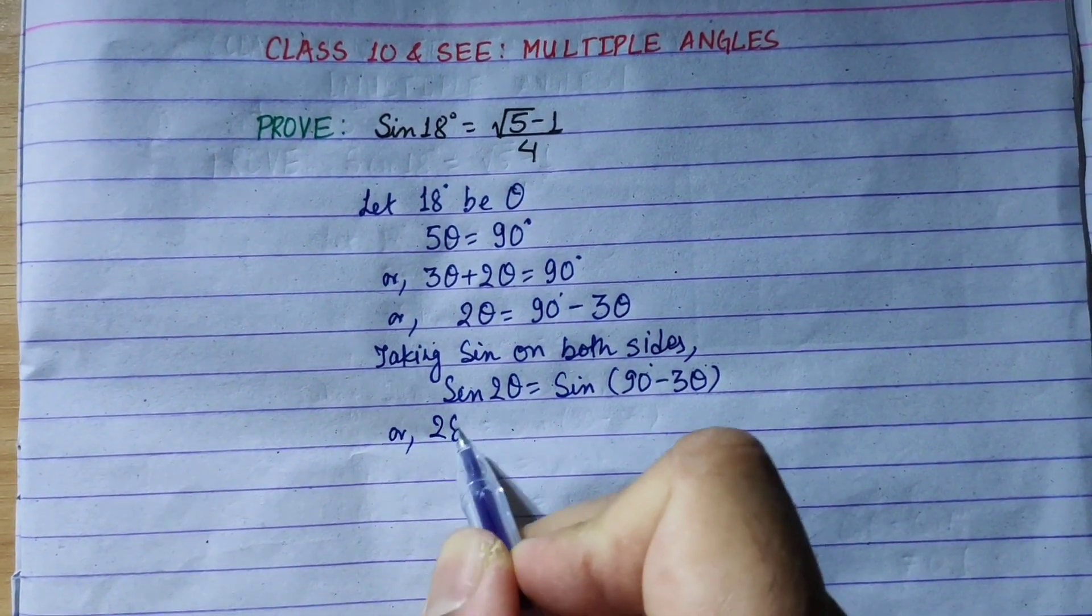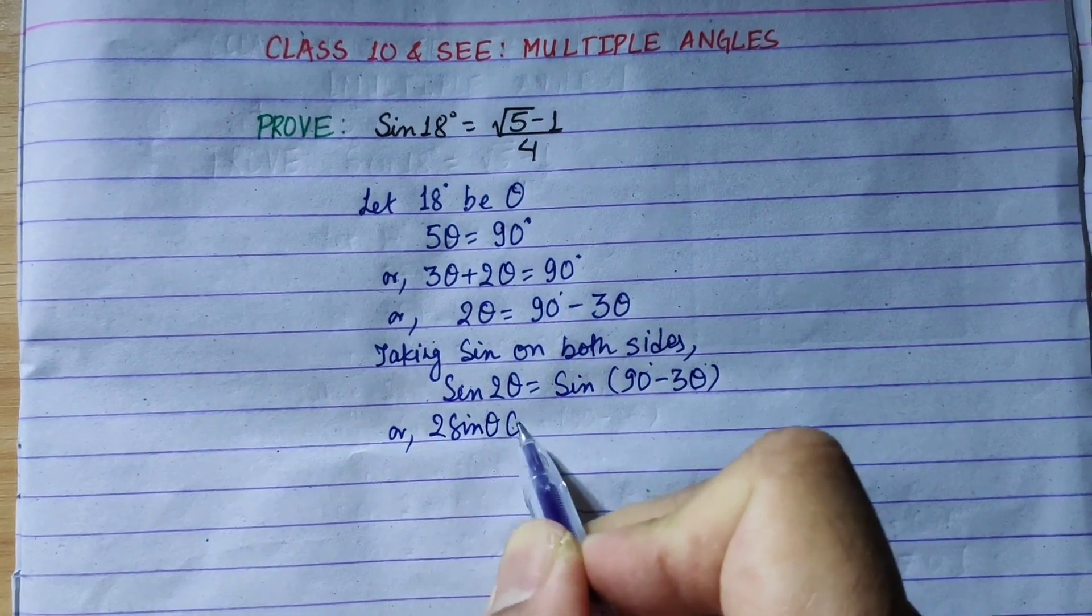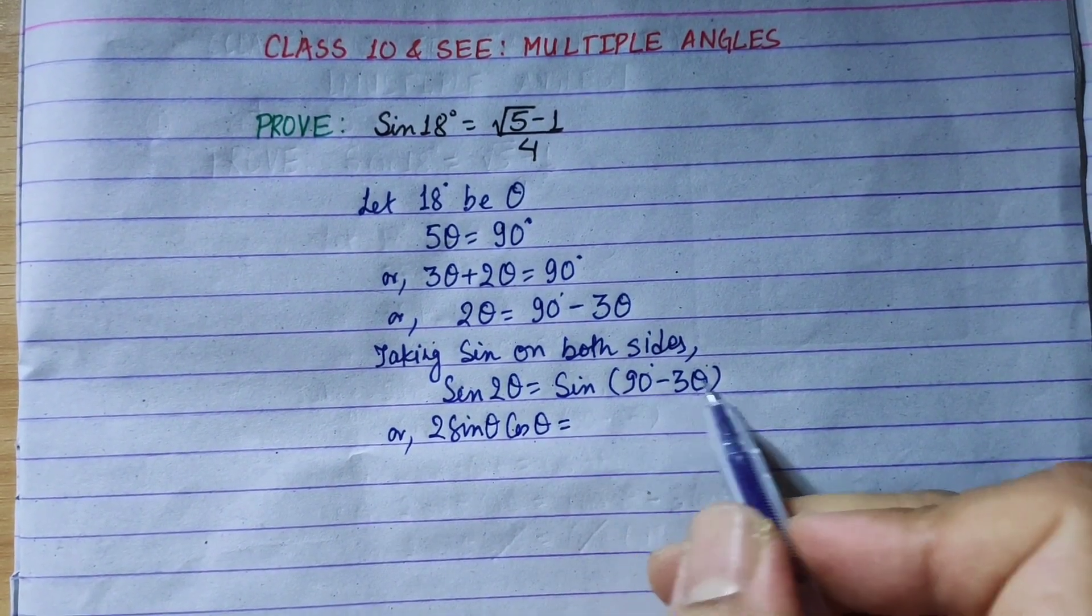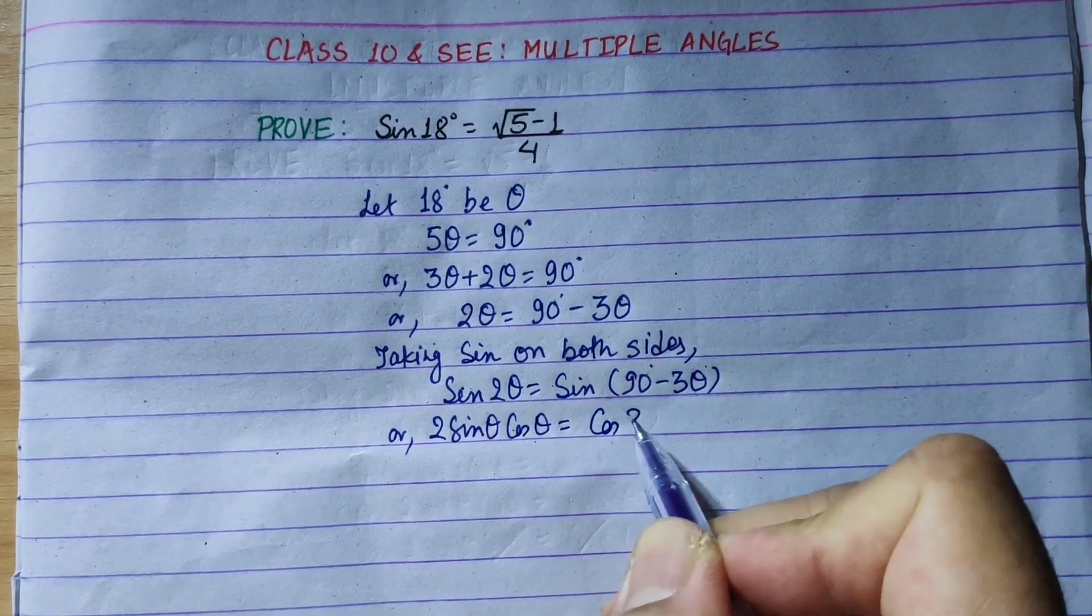Sin 2 theta is equal to sin bracket 90 minus 3 theta, which equals cos 3 theta.